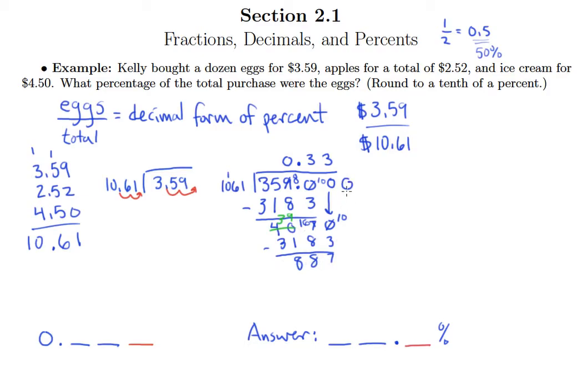Again, add another zero, drop it down. 1061 goes into 8870, I think that's going to fit in eight times actually. So we're going to get eight times one is eight, eight times six is 48, eight times zero plus four is four, and eight times one is eight. So we have 10 minus eight is two, and we had to borrow and borrow one more time. So 16 minus eight is eight, seven minus four is three.